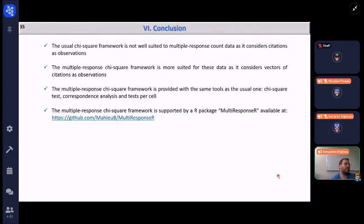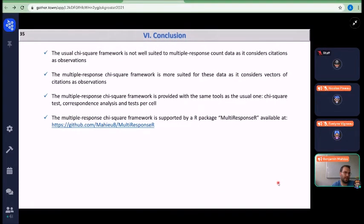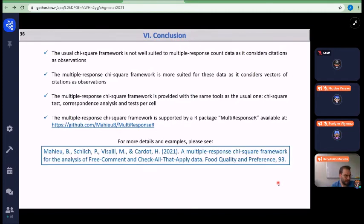So as a conclusion, I would say that the usual chi-square framework is not the most suited to analyze check all that apply and free comment data. The multiple response chi-square framework is most suited because it considers vectors of citations as observations, which is more in line with how the data are collected. The multiple response chi-square framework is provided with exactly the same tools as the usual one, a chi-square test, the correspondence analysis, and the chi-square test per cell. And it is supported by a package available on GitHub and by a publication, which includes more examples if you are interested in the framework. And I thank you for your attention.